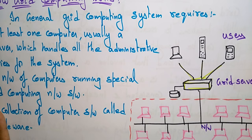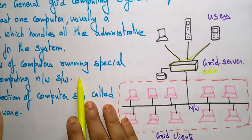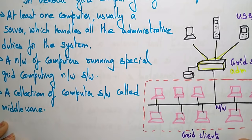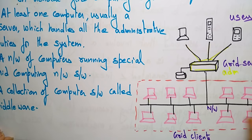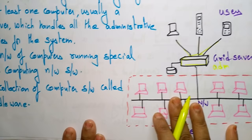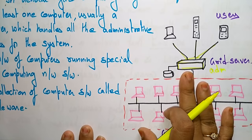The computers in the grid run special grid computing network software. A collection of such software is called middleware. So the grid has both hardware resources (the server) and software resources (middleware) that support the grid, and through this connection data is distributed to achieve the common goal.